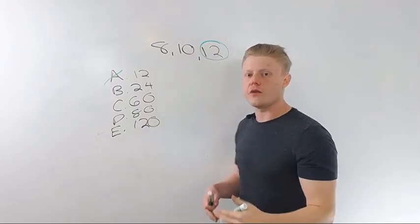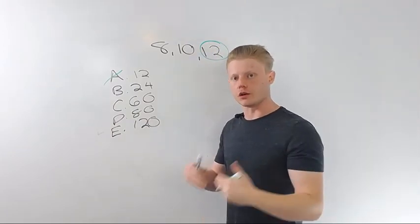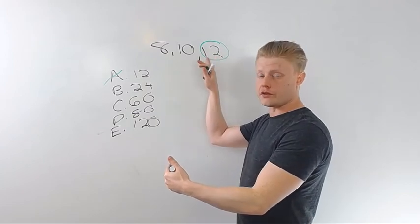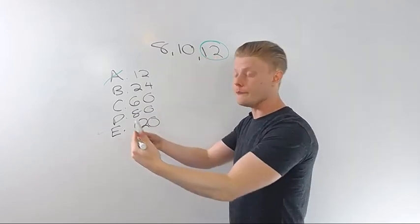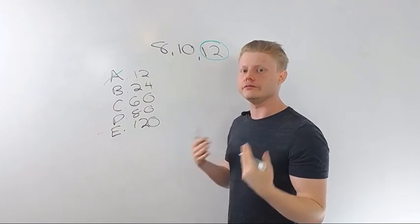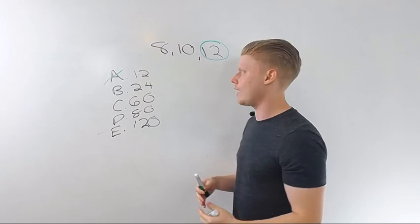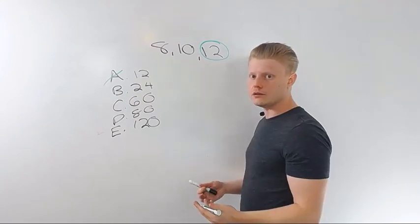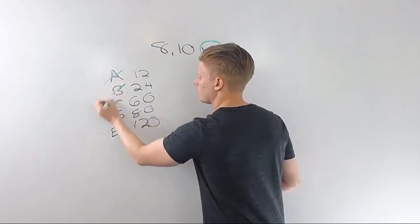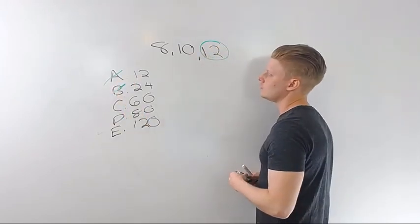Now, on greatest common factor, we started with the smallest number and worked our way down. In this case, we work with the biggest number in the set and work our way up. Now, because 10 is in there, you can kind of eliminate some without doing the math. So, 10 only has multiples that end in zero. So, 24 is out. So, we can try 60.